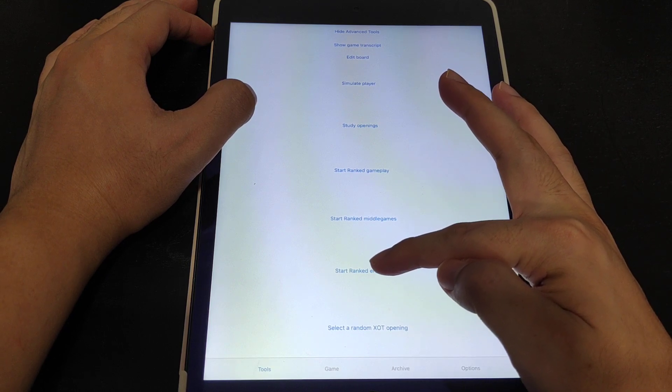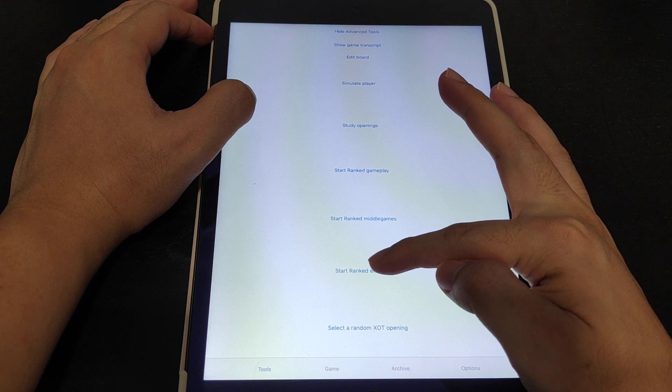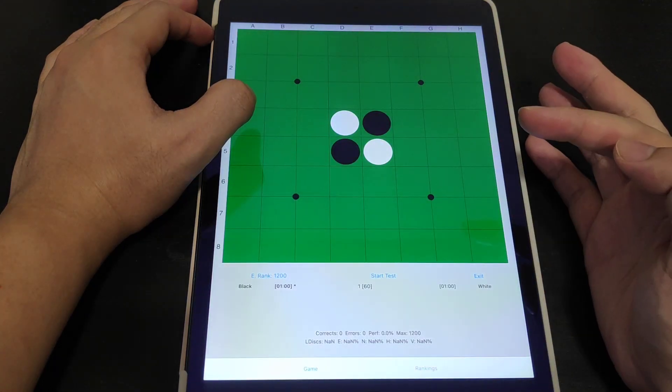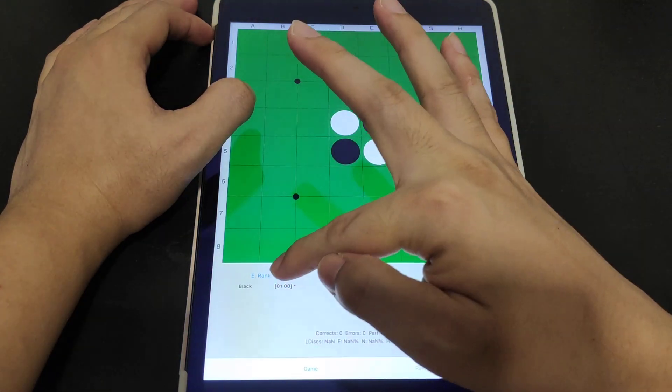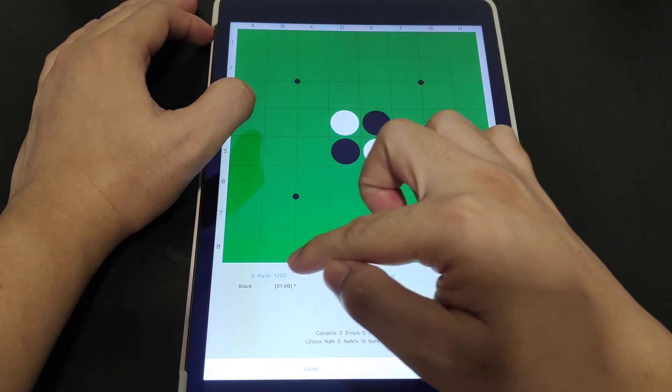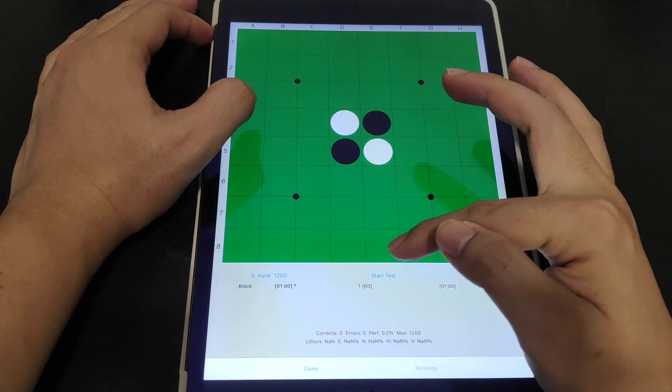Let's click on End Game Puzzles which is the most popular and normal kind of end game. Over here you have the Rank. Your Rank is currently at 1200 and you can start the test.